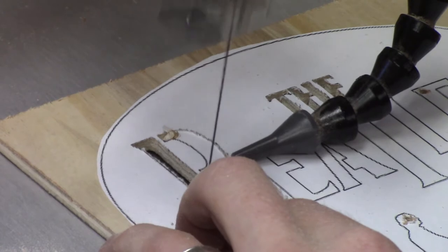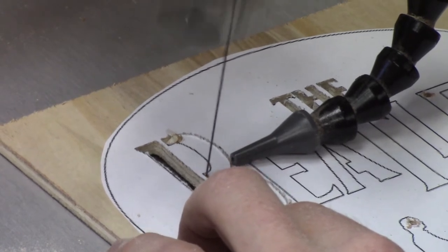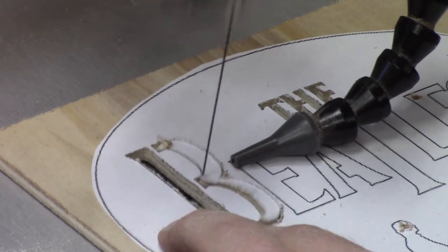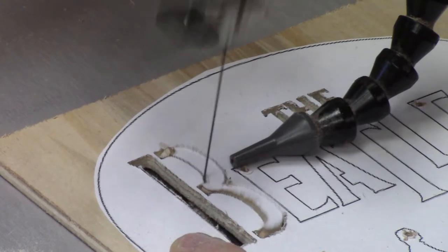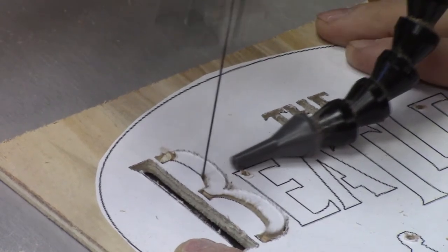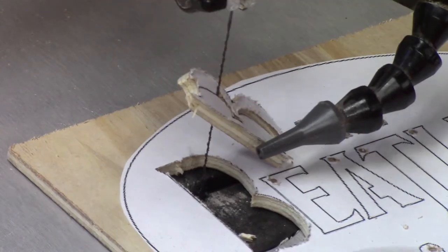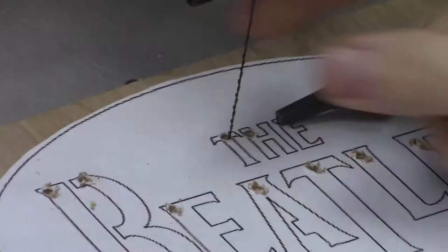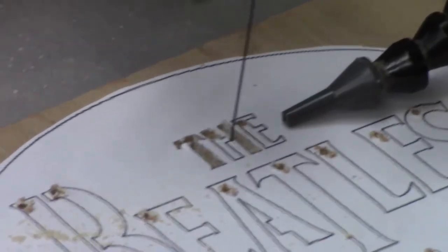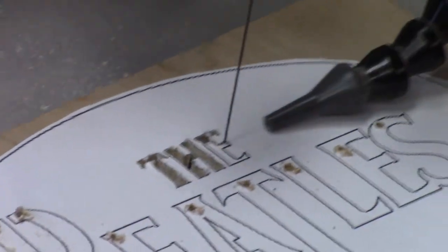Everything was going so well and then four letters in, the blade got away from me and I snapped the middle part of the bee. So I started over again. I printed out another template, I attached all the pattern again, I drilled all the holes once more and tried it again.